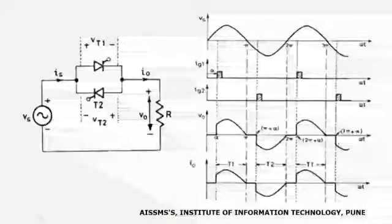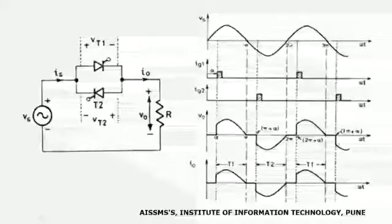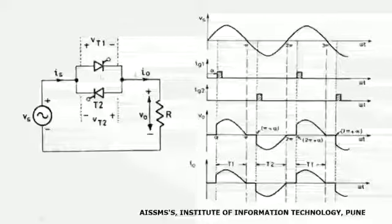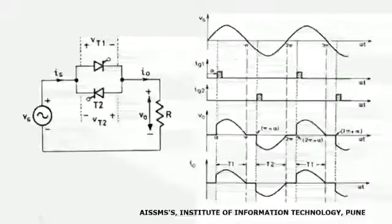During this operation, the direction of current through the load gets reversed, and the voltage across the load also gets reversed. Again at instant 2pi, the source current and source voltage reduce to zero, natural commutation takes place in thyristor T2, and T2 gets turned off. From instant 2pi to 3pi, a positive half cycle appears across the voltage regulator and the same operation continues for the next period.